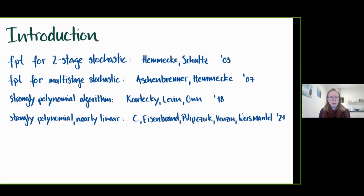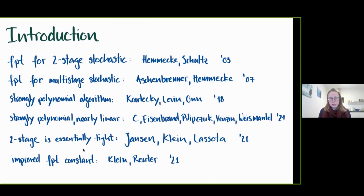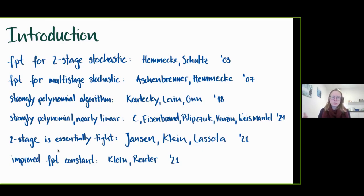We gave this year the first strongly polynomial algorithm that is nearly linear in the number of blocks. There is also a lower bound for two-stage stochastic integer programs showing our result is nearly tight, due to Klaus Jansen, Kim, and Alexandra. Another recent result, appearing in SODA next year, gives improved dependency on the parameters for multi-stage stochastic integer programs by Kim and his student Janina Reuter.